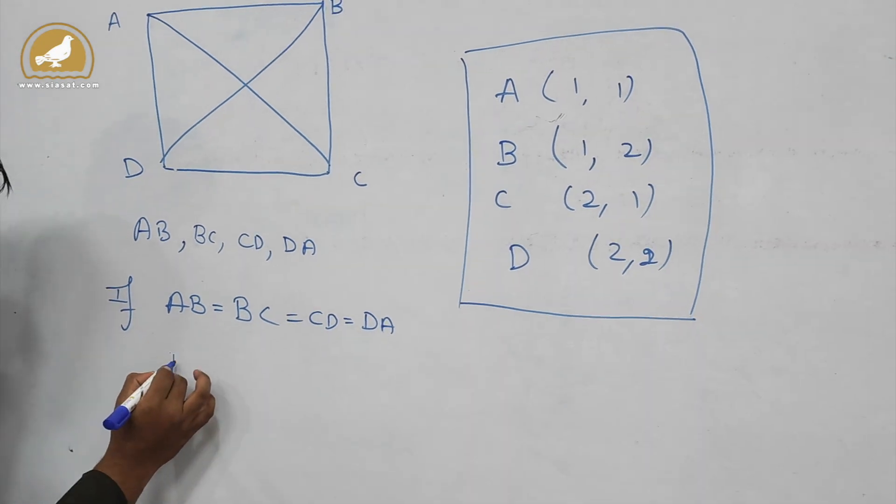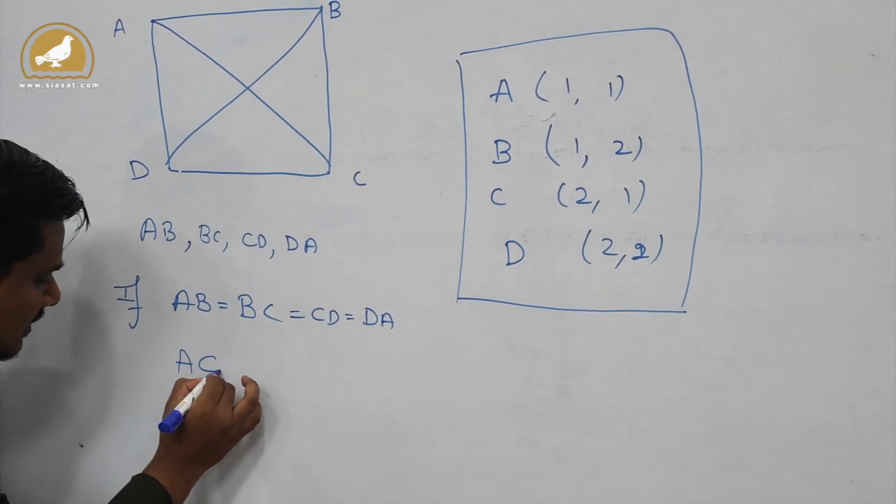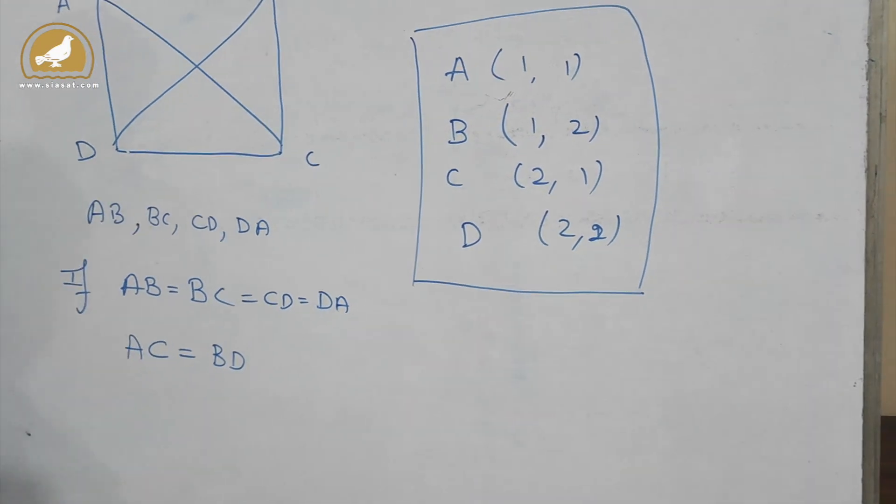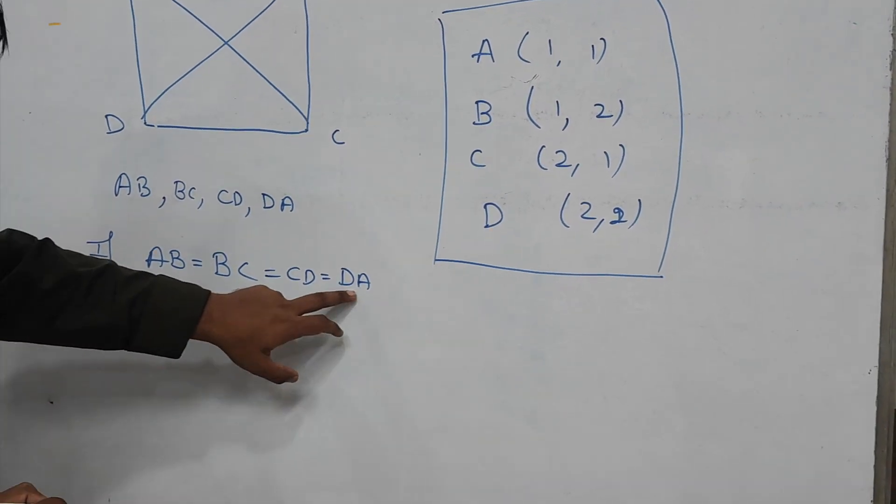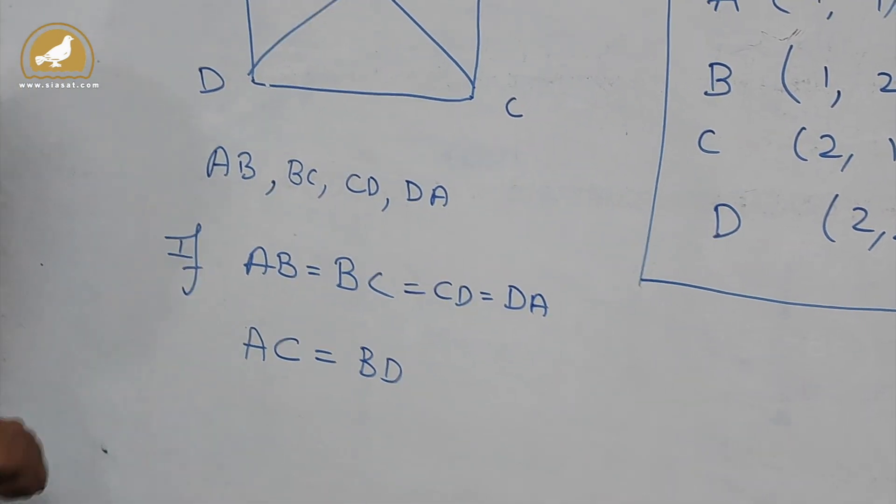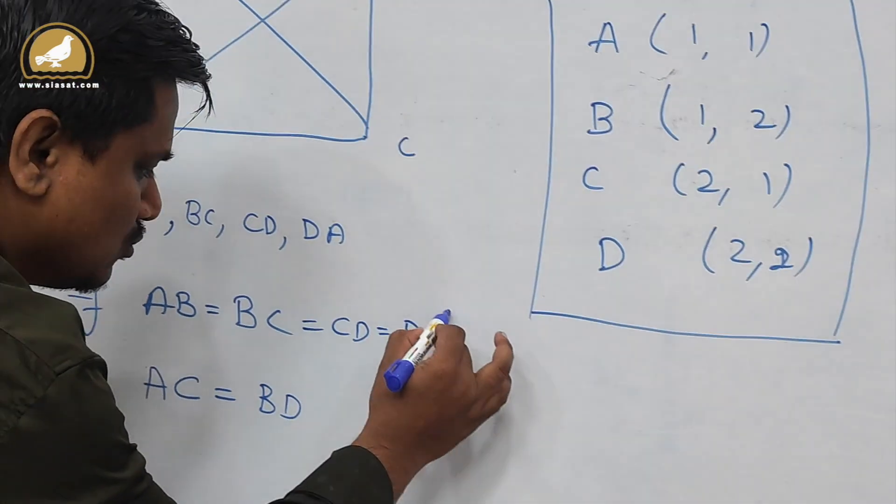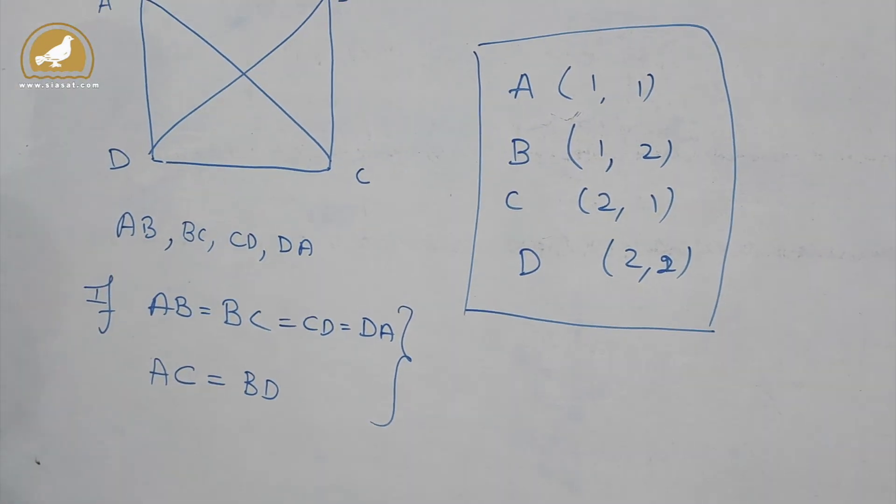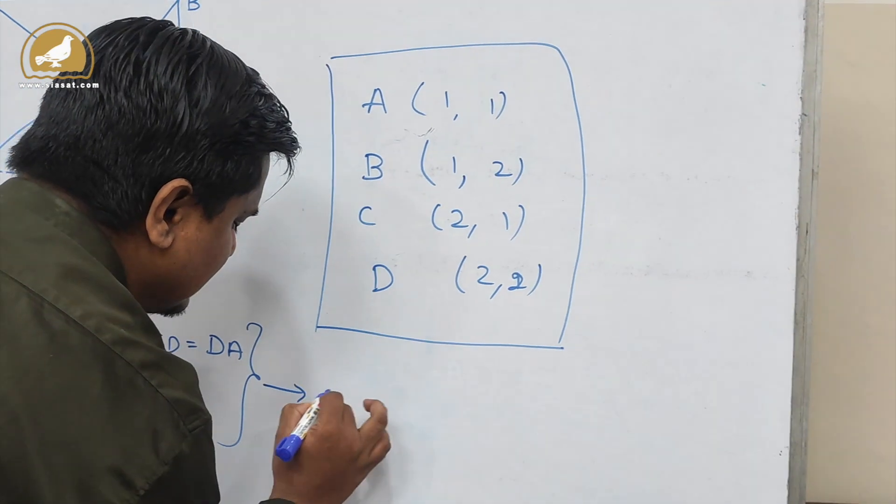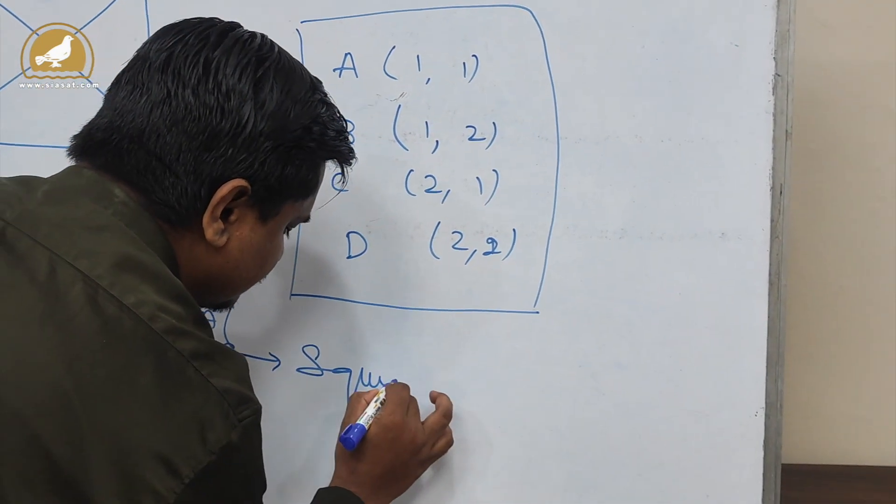The distance between B and D. If distance between AB, BC, CD, DA are equal, as well as the distance between AC and BD are equal, if these two conditions are satisfied by this structure, then I can say that it is a square.